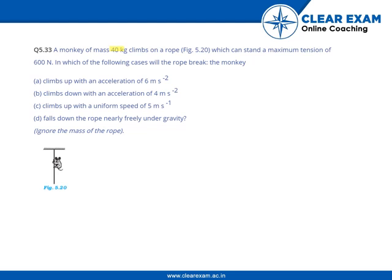A monkey of mass 40 kg climbs on a rope which can stand a maximum tension of 600 Newton. In which of the following cases will the rope break? Case A: when it climbs up with an acceleration of 6 meter per second square. Case B: when it climbs down with an acceleration of 4 meter per second square. Case C: it climbs up with a uniform speed of 5 meter per second. Case D: falls down the rope nearly freely under gravity.